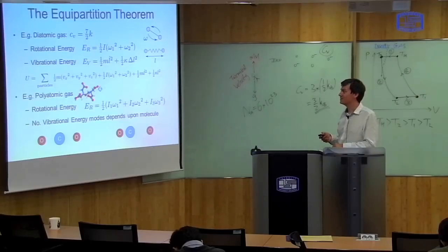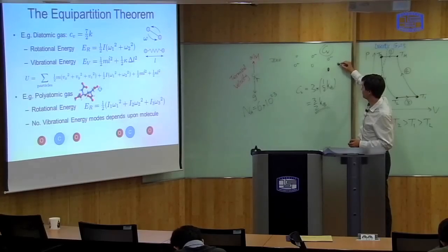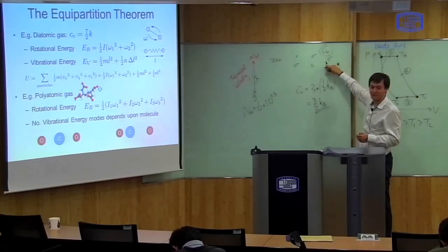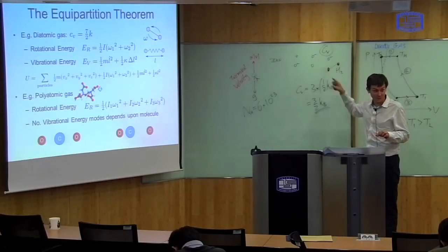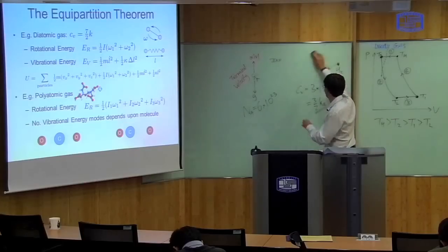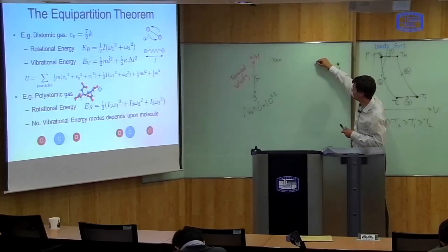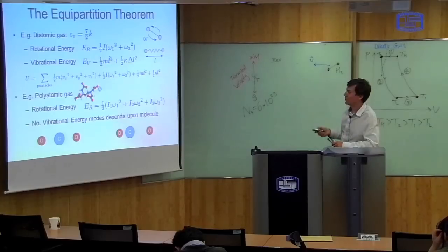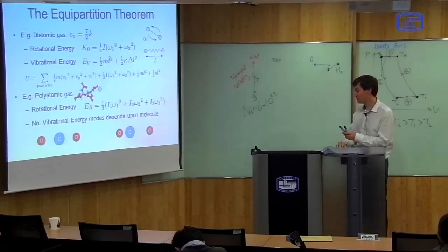We can look at the more complicated diatomic gas — a gas where there are two particles per molecule, like hydrogen, attached by some attractive interaction. The internal energy is more complicated because this molecule can do various things. First, it can just move with some velocity V, giving kinetic energy: a half m times (vx² + vy² + vz²). But it can also rotate — for a diatomic molecule, it can rotate in two different modes: in the vertical plane or in the horizontal plane.